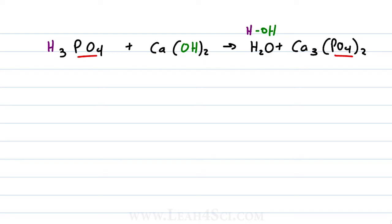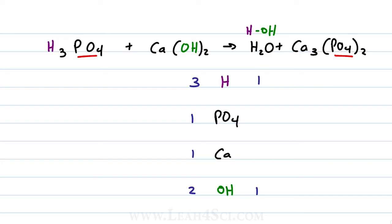This allows us to write a very simple list: the acidic hydrogen, the phosphate anion — we don't even need the charges because we're just looking for whole numbers — the calcium cation, and the basic hydroxide. Now let's balance. On the reactant side we have 3 acidic hydrogens, 1 phosphate anion, 1 calcium, and 2 hydroxides. In the products we have 1 water molecule (1 HOH), 3 calcium, and 2 phosphate anions.